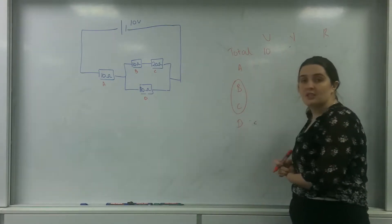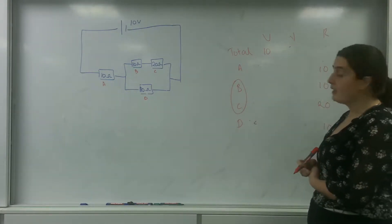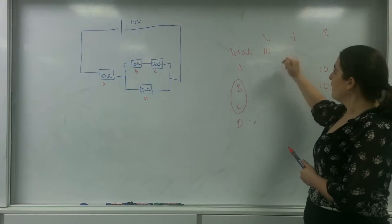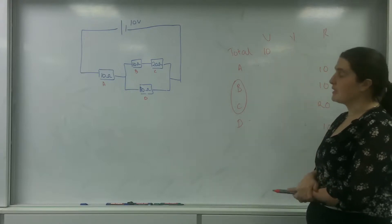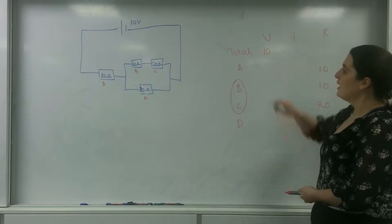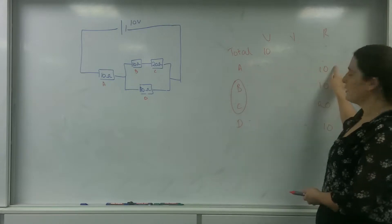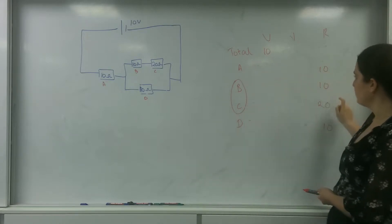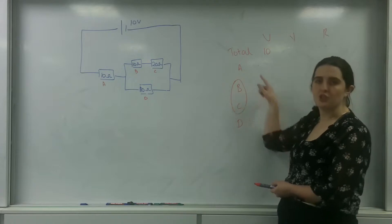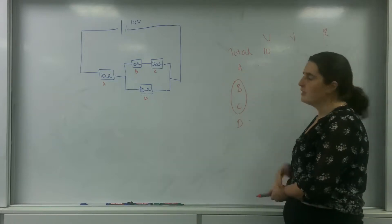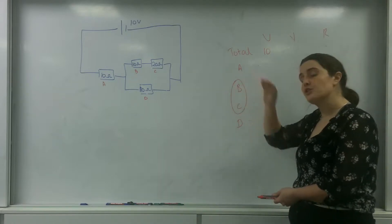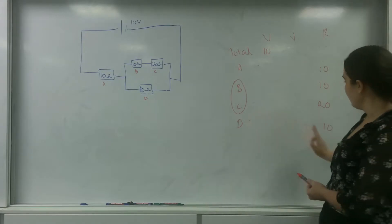I'm going to write the information down here in a table. So I know in total I have 10 ohms, 10 volts of potential. I have A with 10 ohms, B and C with 10 and 20, and I've highlighted them like this to show that they're in series with each other, so I remember that they have the same current going through them. And D here has 20.